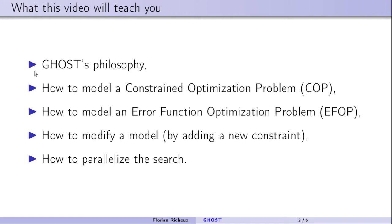I will show you a demo: how to model your own constraint optimization problem, then how to model an error function optimization problem. For the problem we will tackle, you will see that you just need to change one line to go from a COP to an IFOP. Then how to modify the model by adding a new constraint, and finally how to make the search parallel.